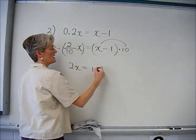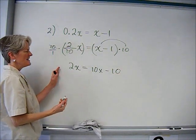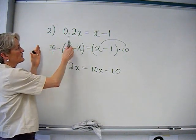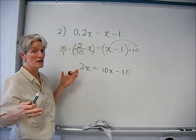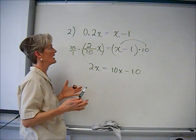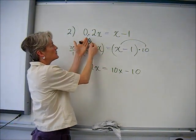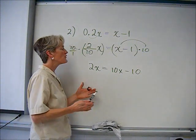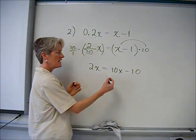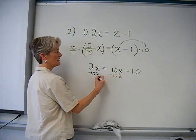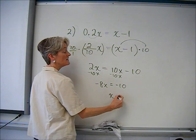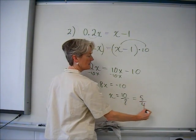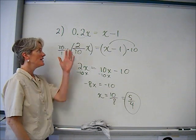Those tens divide out, so I have 2x equals 10x minus 10. I didn't really need to write that intermediate step. As always there are lots of ways to do this — I could have just embraced the decimal, but since we're not working with calculators that could get tricky. I could also have just moved the decimal one place to the right by multiplying everything by ten. Now I'm going to subtract 10x, get my x's on one side, everything else on the other, divide by negative eight, and simplify.